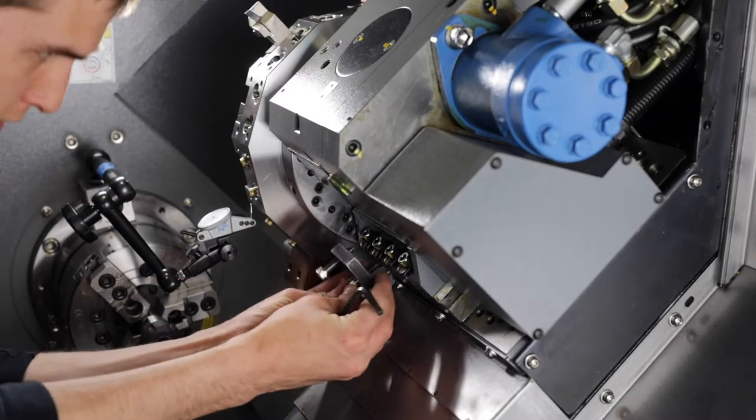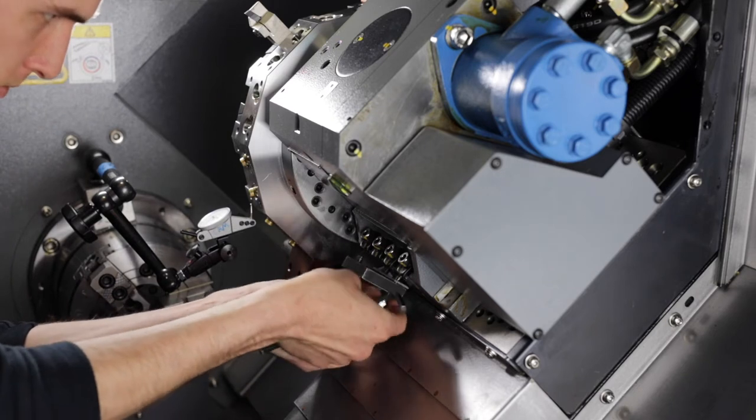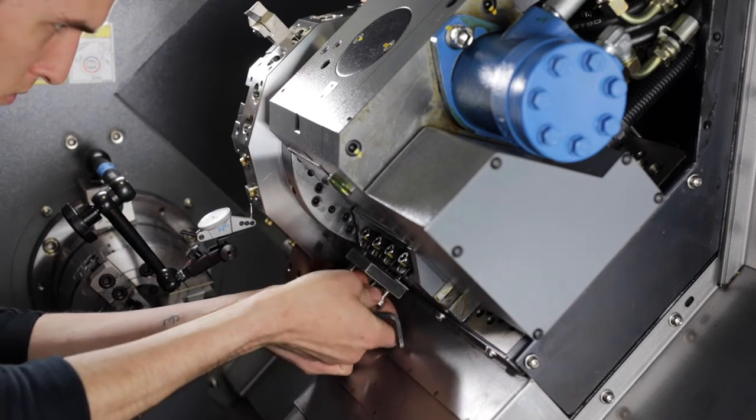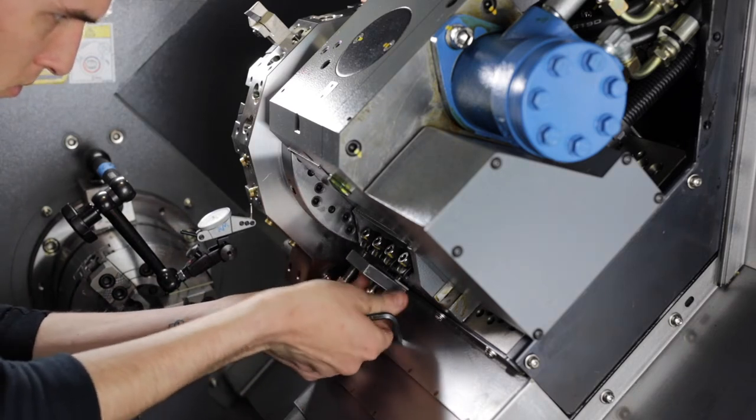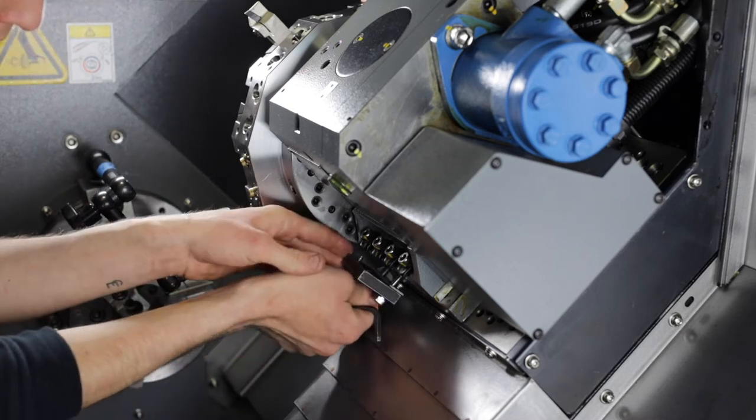Next install the turret push block. This can be found inside the red tool box that shipped with your machine. We will use this to push or pull the turret into alignment.